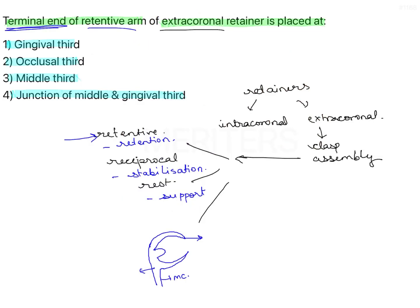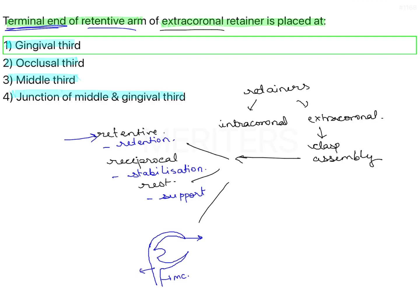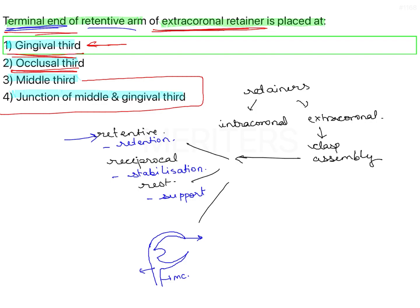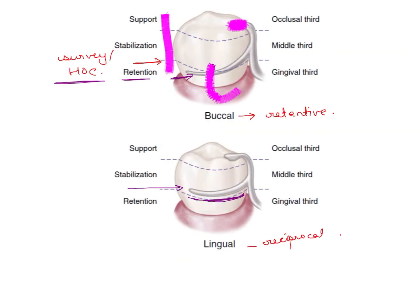Looking at the options — gingival third, occlusal third, middle third, and junction of middle and gingival third — the tip of the retentive arm terminal should be in the gingival third for a conventional extracoronal retainer like a simple circumferential clasp. The rest will be in the occlusal third, and the reciprocal arm can be in the middle third or at the junction of middle and gingival third. This can be subjective because survey lines can be too high, too diagonal, or too low, changing tip position — but by general rule of thumb, this is what we follow. Remember this image as there are a couple of other related questions that can be asked in the exam.